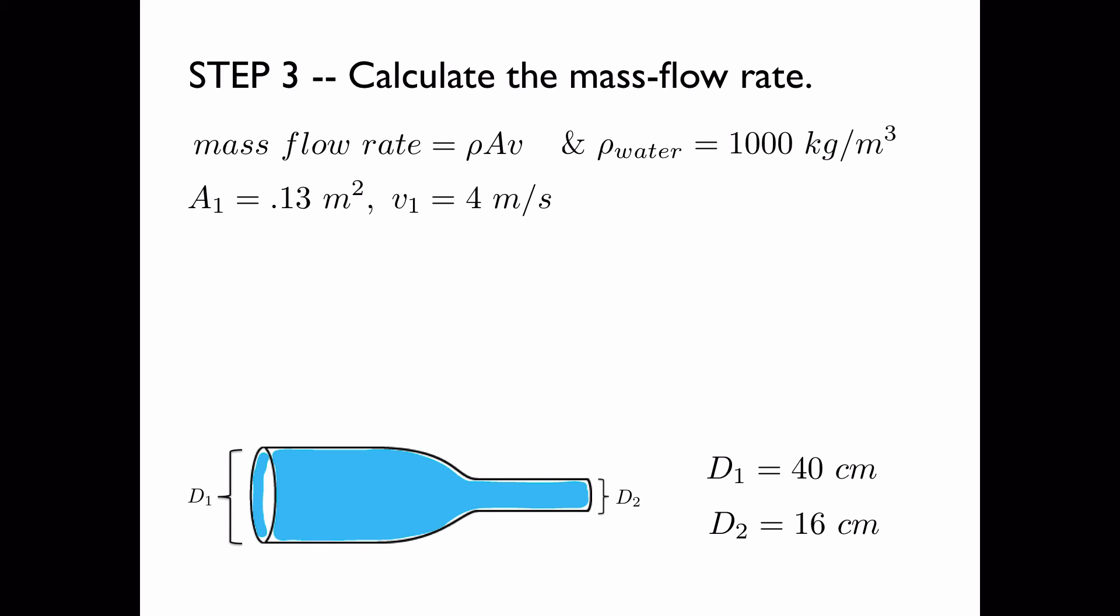In this case, we use the area and the velocity of region 1. So the mass flow rate is given by the product of the relevant components, and it's 520 kilograms per second.